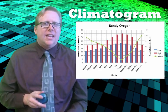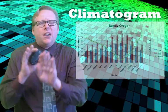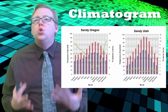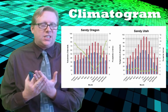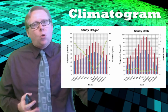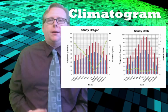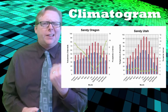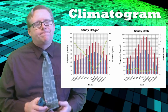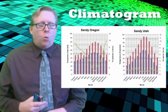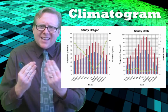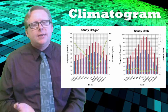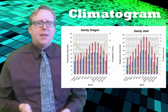The nice thing about a climatogram is that you can take two of them and compare them to each other. Let's compare two different climatograms: Sandy, Oregon and Sandy, Utah. When you build two climatograms and put them next to each other, you can start to see what weather and climate differences are going to happen and what you can expect.